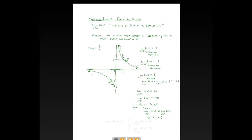Last, let's look at the limit as x goes to infinity. That means we put a point on the graph and have it walk to the right — x-values getting bigger and bigger, approaching infinity. Because of the asymptote at y = 0, the point gets closer and closer to the x-axis, approaching a y-value of 0.